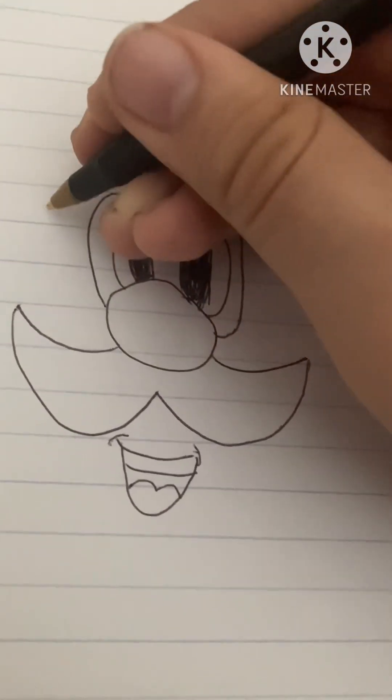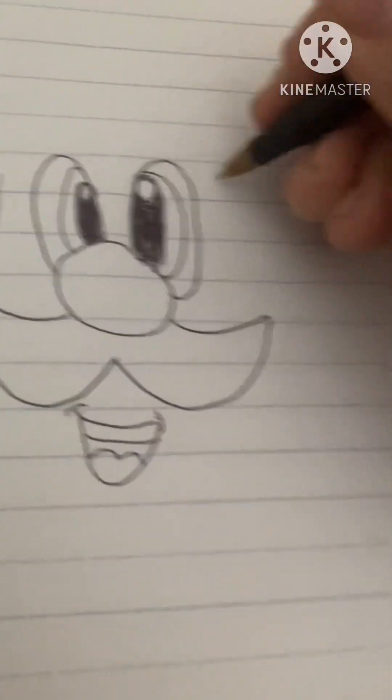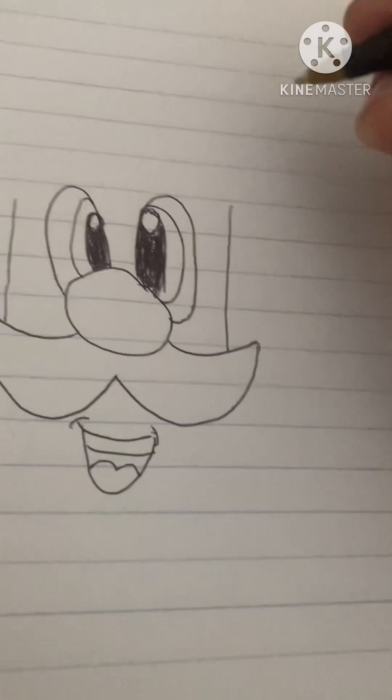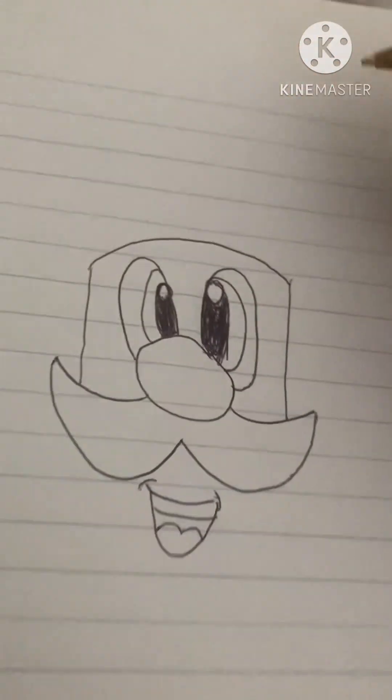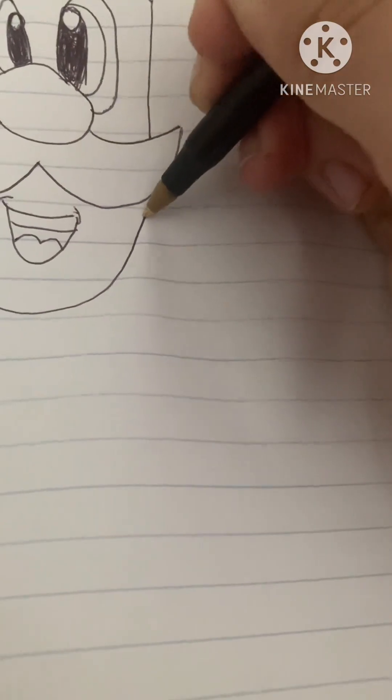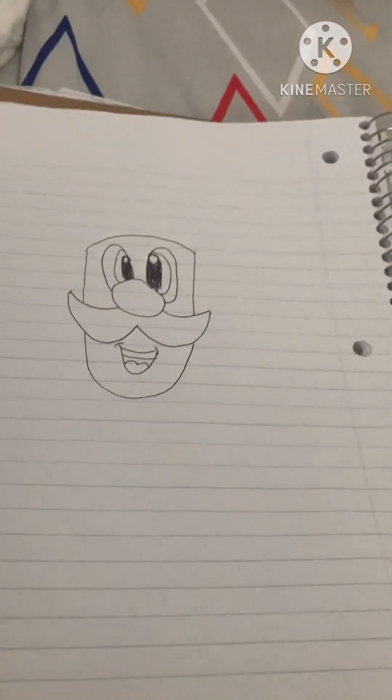Now what you're gonna do is you're gonna make a line down here and another line down here. And now you're gonna do a curve going up and back. And now you're gonna go down here, curve and go up. And there's Luigi's base head.